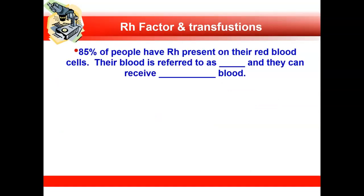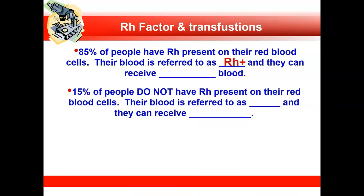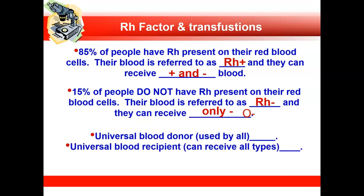85% of people have RH on their red blood cells and are considered RH positive. Anyone who is RH positive can receive either positive or negative blood — so O positive can receive either O positive or O negative blood. However, 15% of people are RH negative and can only receive RH negative blood, or they can have a transfusion reaction. More specifically, the universal blood donor is O negative, and the universal recipient is AB positive.